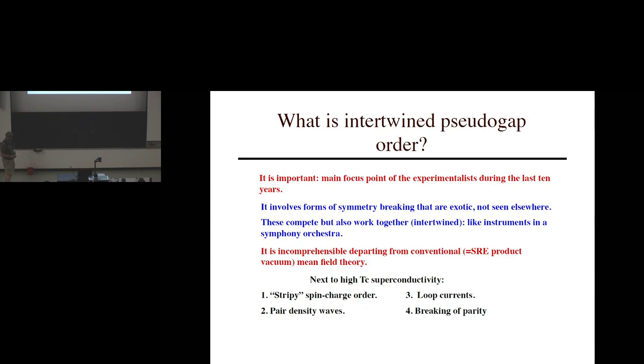And then I will have a little time left to further go on with stories how holography is dealing with this. So what is intertwined order? In the first place, it's very important. During the last 10 years or so, it has been the main focus point in the condensed matter community, mostly because there are a lot of things to see for the experimentalists, so they have work to do. Involves forms of symmetry breaking that are exotic, not seen elsewhere. They really were seen for the first time in high-Tc. This word intertwined is referring to something that is semantically hard to grab. It's a bit like a symphony orchestra. So you have horns that make a lot of noise. You have violins that make a lot of noise, and they tend to compete with each other.